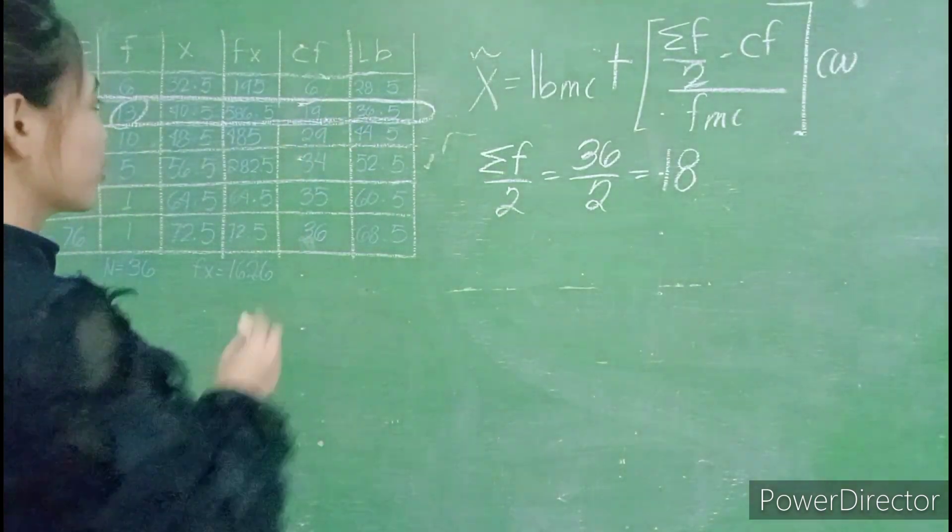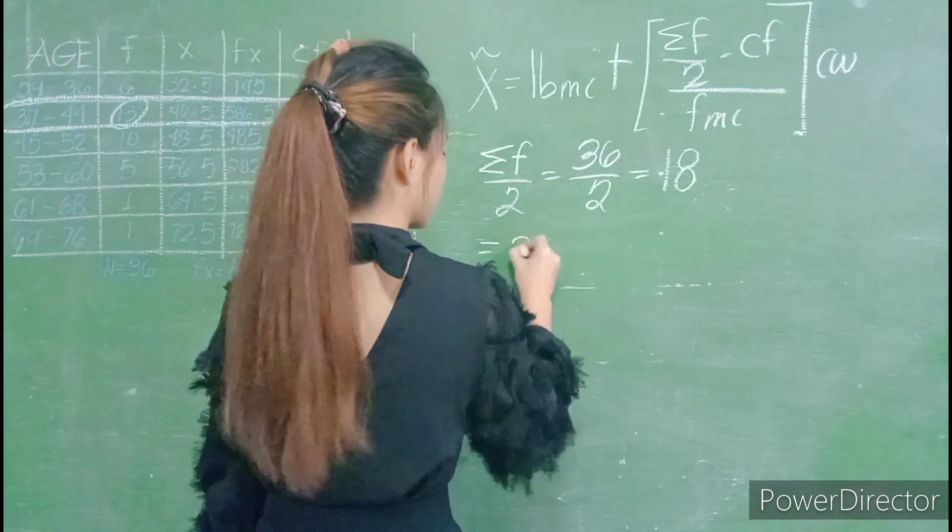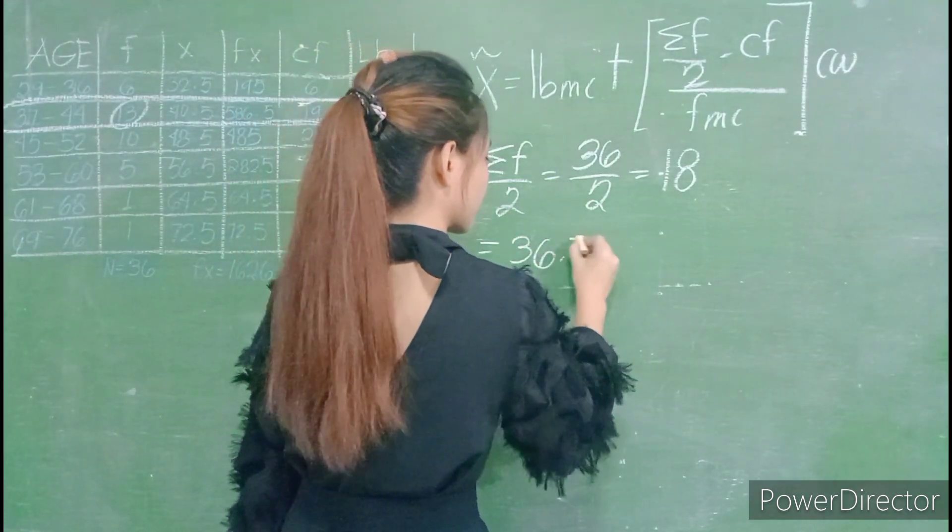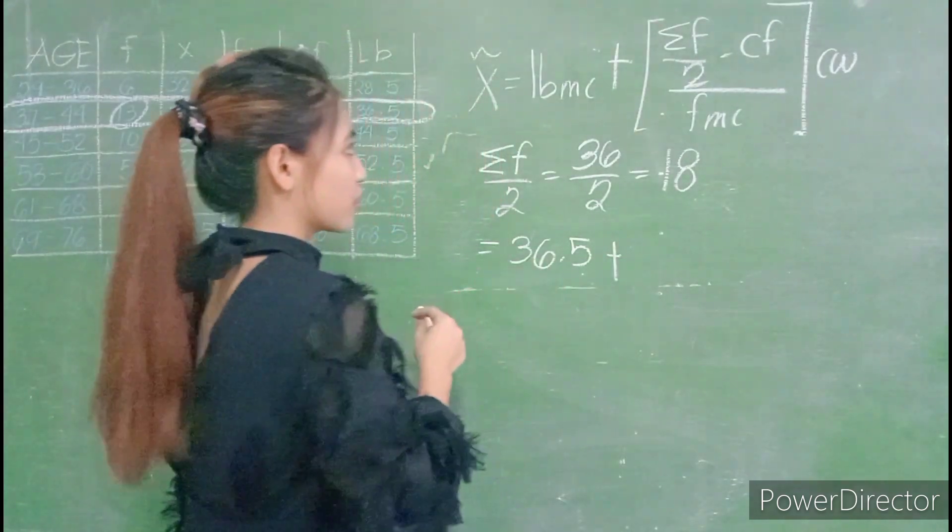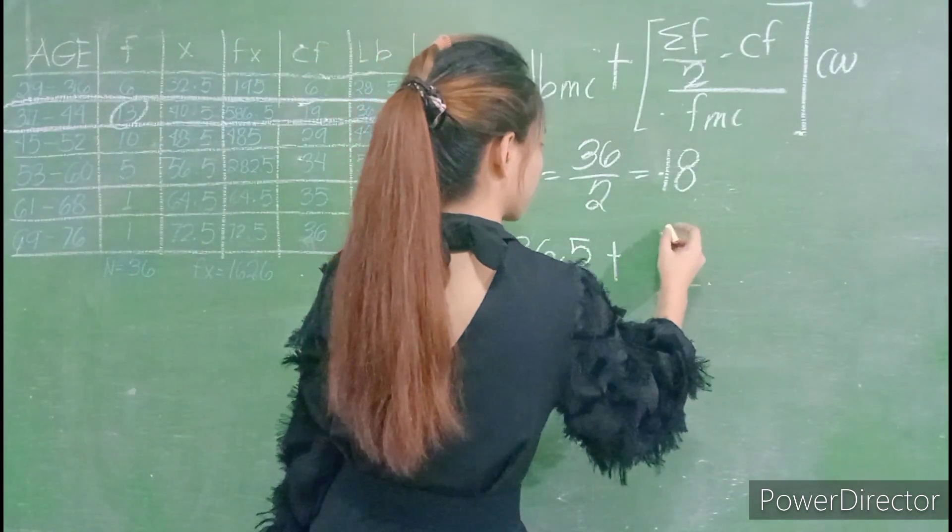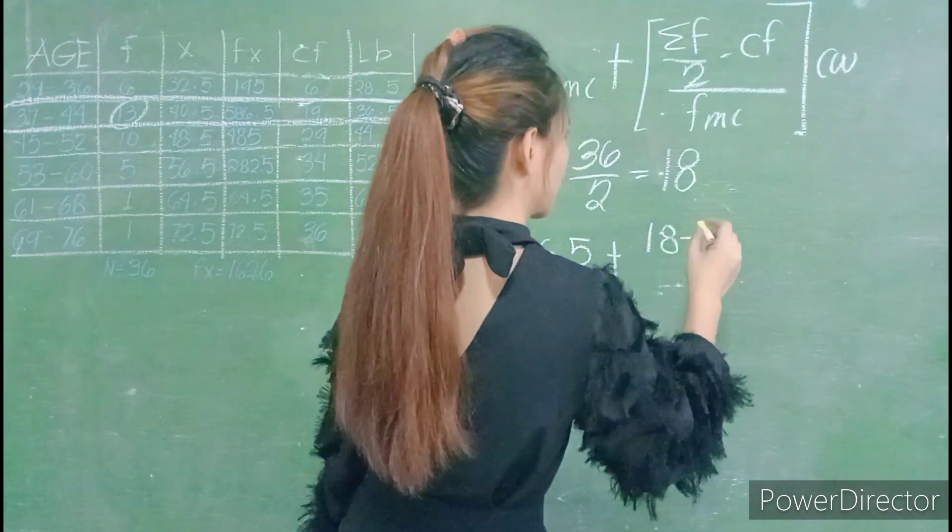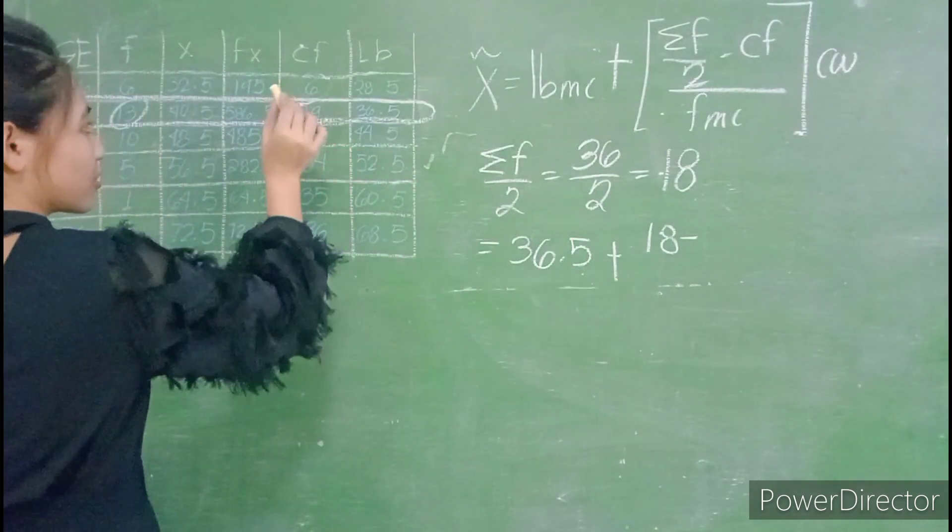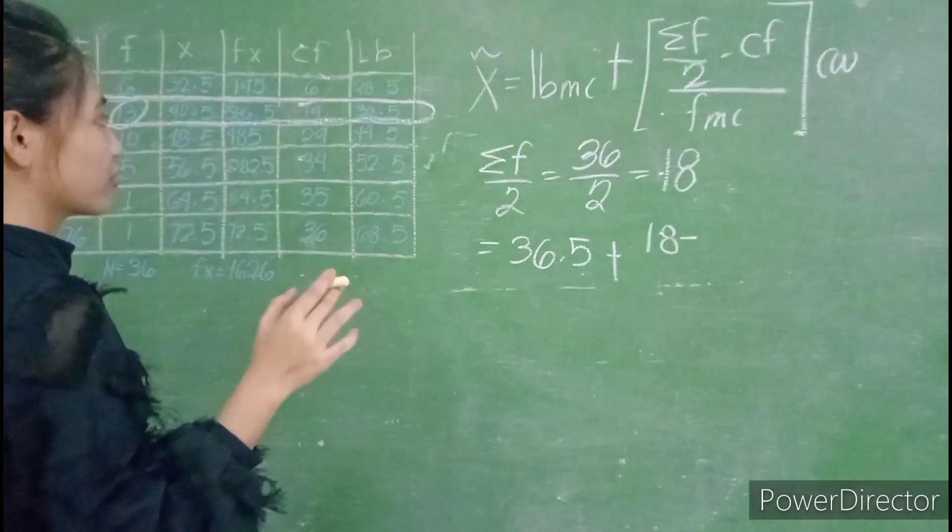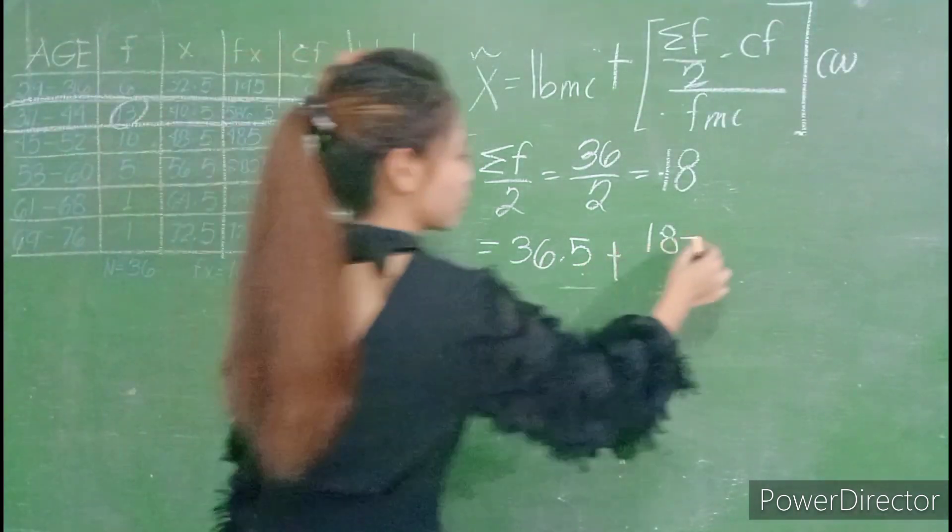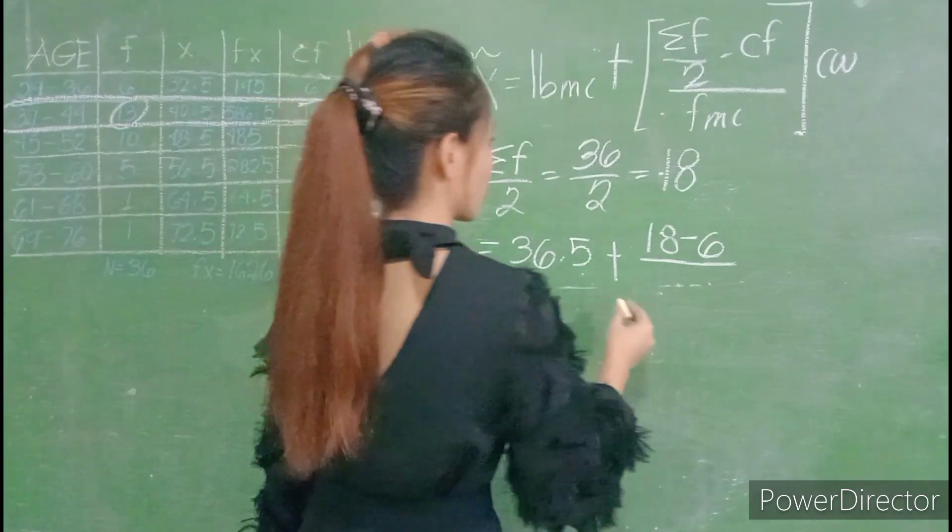And then we get the lower boundary which is 36.5. So 36.5 plus the summation of the frequency which is 18 minus the cumulative frequency which is 6. We will use the cumulative frequency before our median class, 6 divided by the frequency of the median class which is 13.